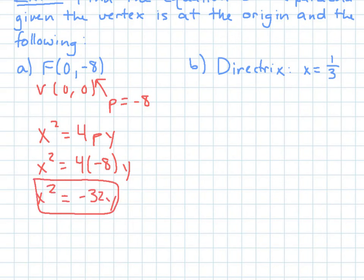So some of these are going to be pretty straightforward because you just want to be able to find the p value. And that's all you really need to complete your equation. So here you're given the directrix for letter b. It's x equals 1 third. Remember that that means it's the opposite. So then p must equal negative 1 third for that to be true.